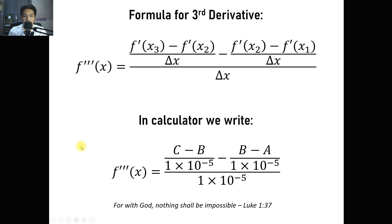In the calculator, we are going to write this formula. Upon getting f prime of x sub 3, we store that value in C; f prime of x sub 2 in B; and f prime of x sub 1 in A. This is the same thing we do for second and first derivatives, where we get the derivative of a function with x having a value of 0.1. So x sub 1 is 0.1, x sub 2 is 0.1 plus 1 times 10 raised to negative 5, and x sub 3 is 0.1 plus 2 times 10 raised to negative 5, keeping delta x at 1 times 10 raised to negative 5.